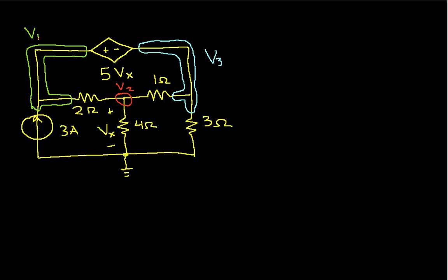So this kind of complicates things. It turns out that we know what we need to do, though, to make it work. First off, we know that because of the voltage source between node 1 and node 3, that V1 minus V3 will be 5 times Vx.